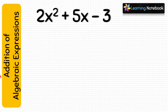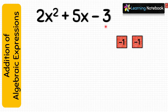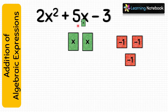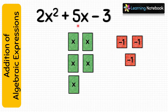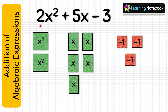In the same way, let's represent the second expression which is 2x square plus 5x minus 3. First, we will represent term minus 3 by putting 3 red small squares. Next, let's represent term 5x — we will put 5 green rectangles for it. Then, we will represent term 2x square using 2 green big squares.